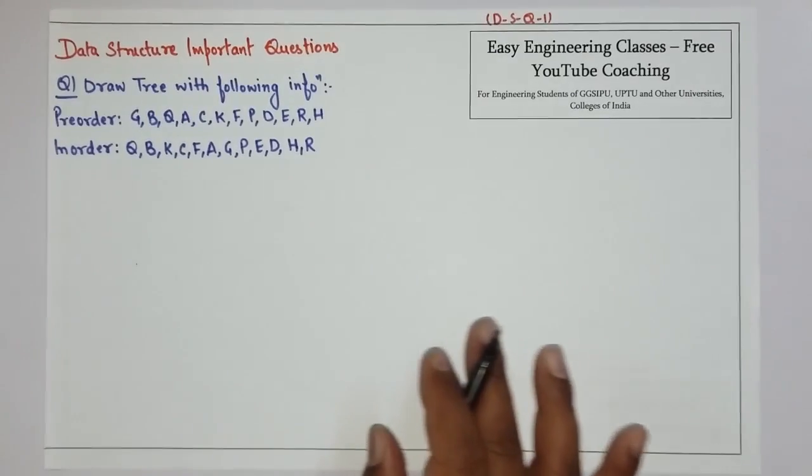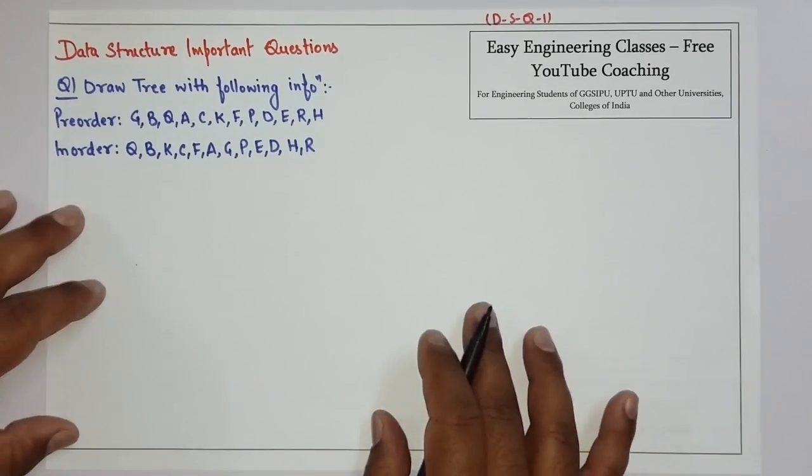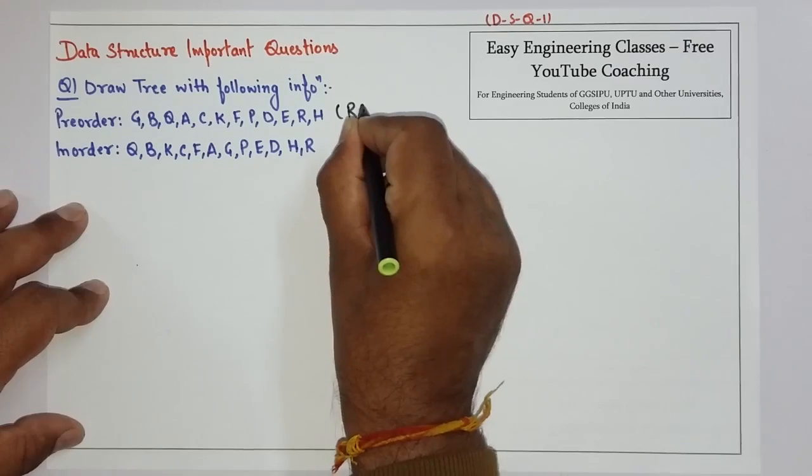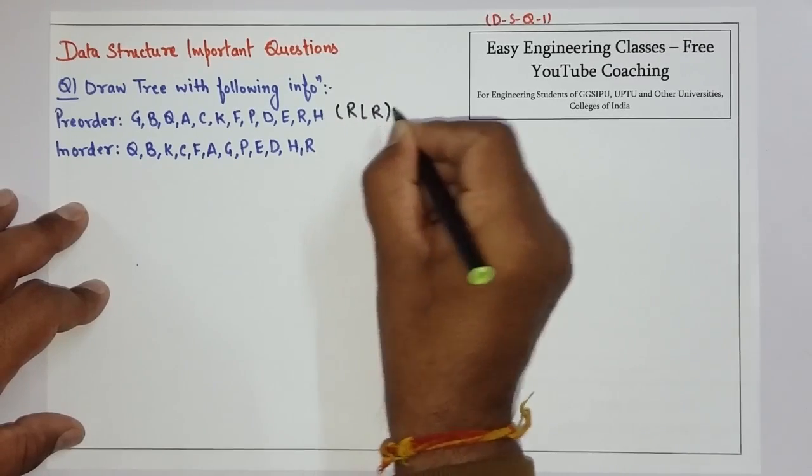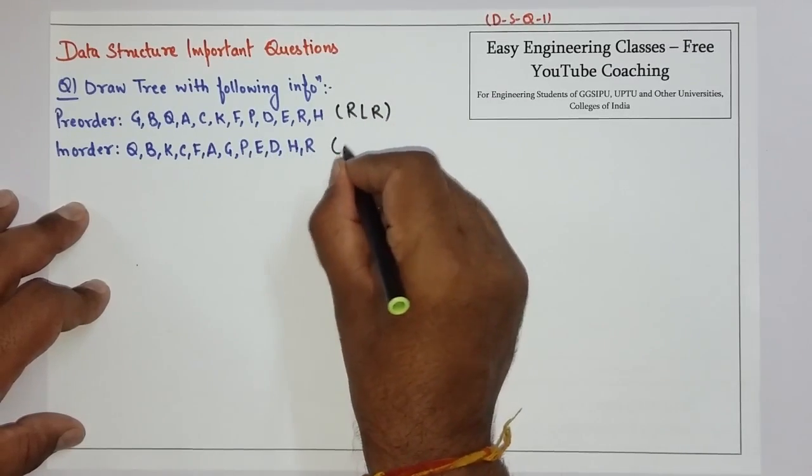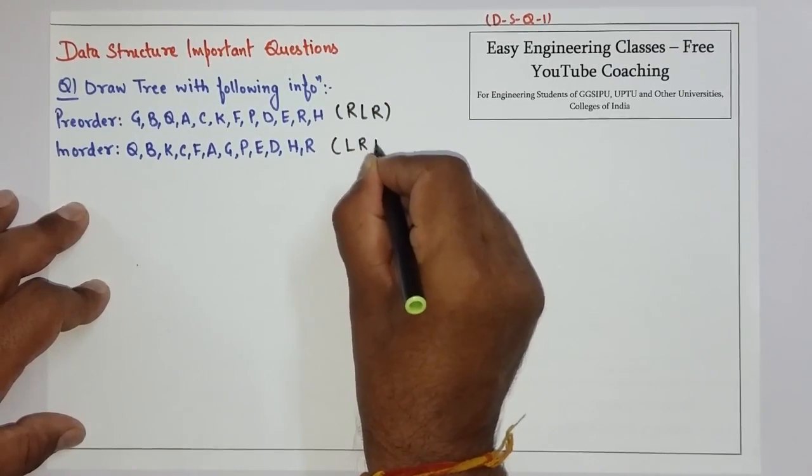Since we know that pre-order traversal is root, left, and right, and in-order traversal is left, root, right.